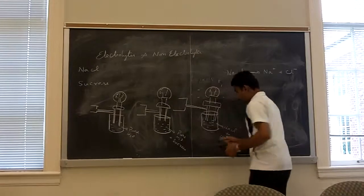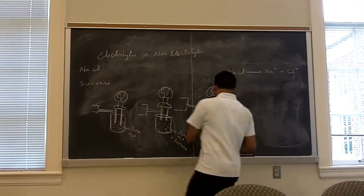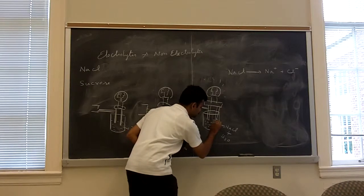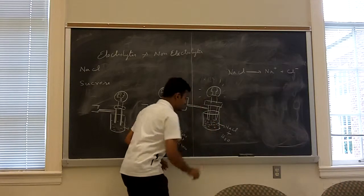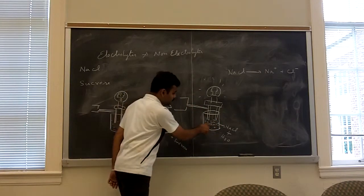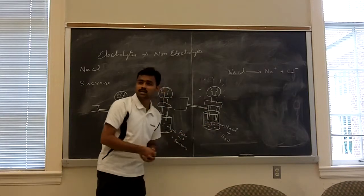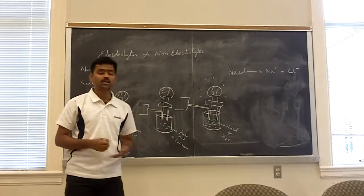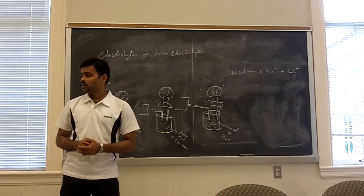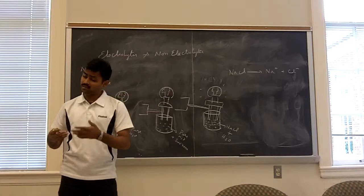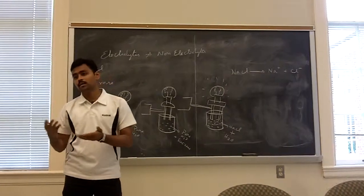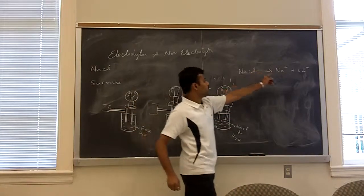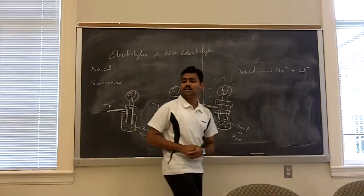So this is called as Na plus ion, which is nothing but cation. Positively charged particles are called as cation and negatively charged particles are called as anion. Right. So what happens when it dissolves? You have this container full of plus and minus ions. So this plus and minus ions are nothing but ions.